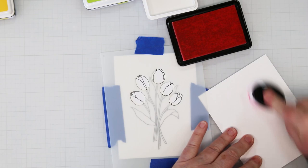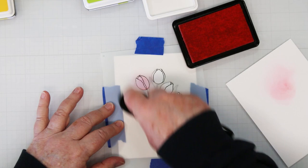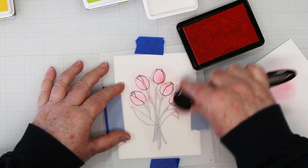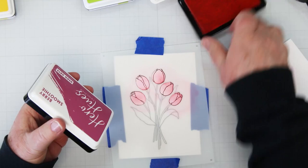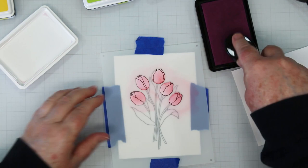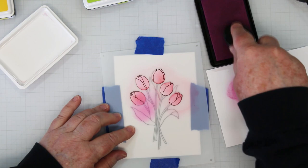I'm starting off adding my color. I'm using the solid stencil to begin with and I'm putting down a very light coating of the cotton candy. Now I'm switching over to the berry smoothie and I'm going to use the same blending tool. I'm just cleaning it off.